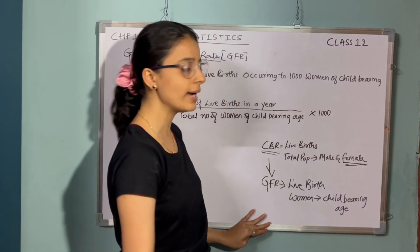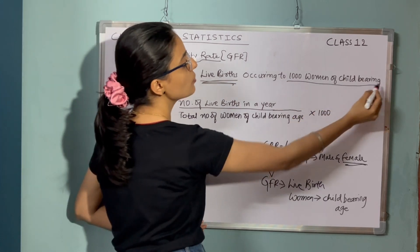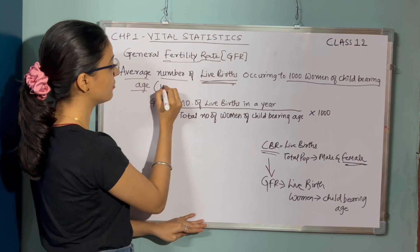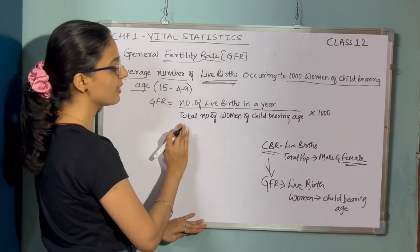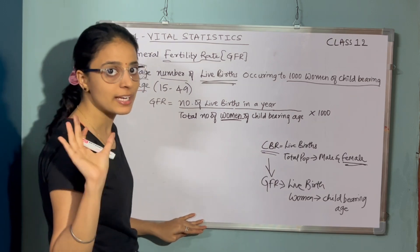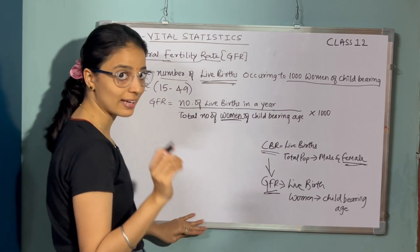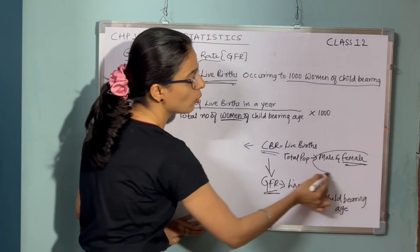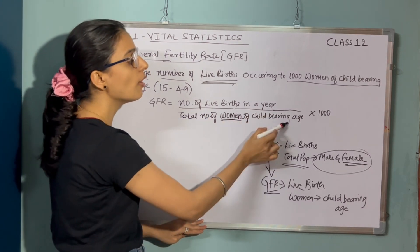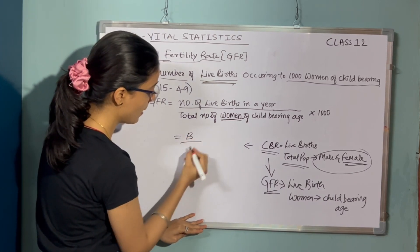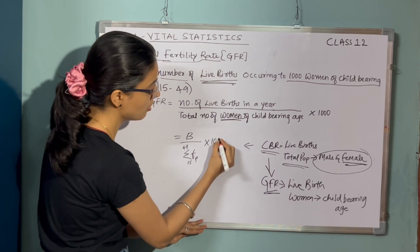Women of child-bearing age. So what is GFR? It is the average number of live births occurring to 1000 women of child-bearing age. The child-bearing age is 15 years to 49 years. The formula is: number of live births in a year divided by total number of women — only female population is considered when calculating GFR — of child-bearing age, into 1000.